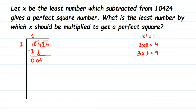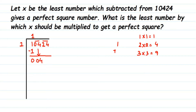For every step the divisor changes. The new dividend is 4. To find the divisor for this step, take the current quotient (which is 1) and double it: 1+1 = 2. So we have 2 in the tens place. We need to find a units digit to place alongside 2, such that when we multiply the full number by that units digit, the product is less than or equal to 4.